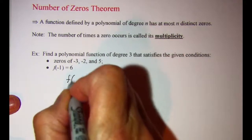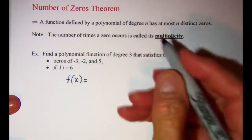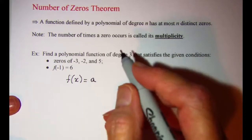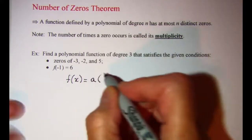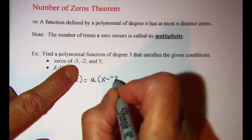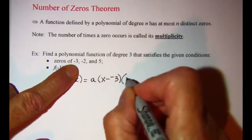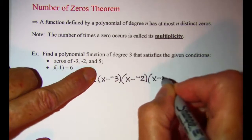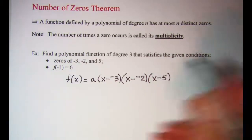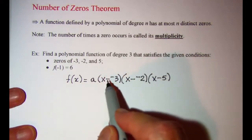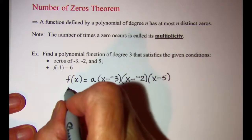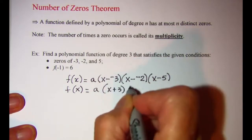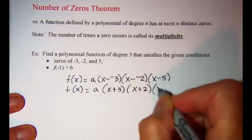So we can write our function as f of x equals some number a — we'll find out what that a is in a minute — multiplied by x minus negative 3, times x minus negative 2, times x minus 5. Simplifying, f of x equals a times x plus 3, times x plus 2, times x minus 5.